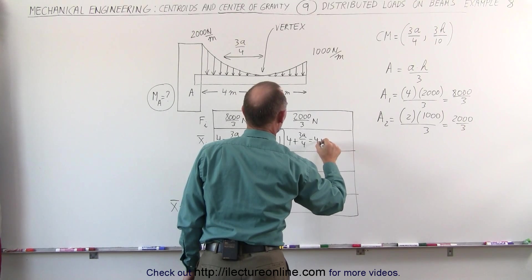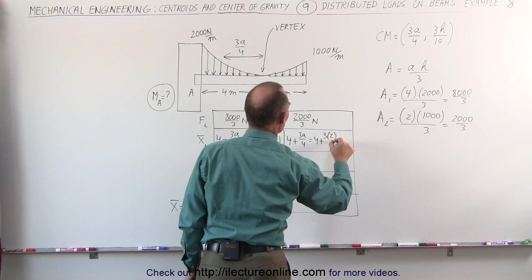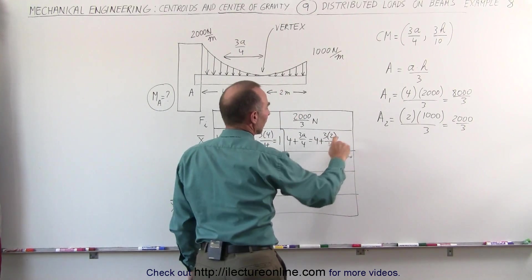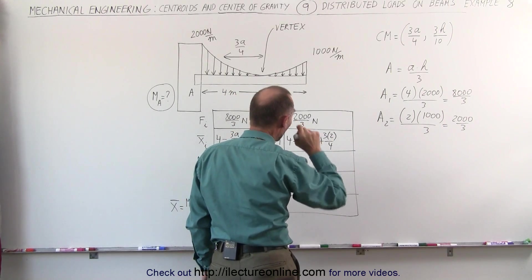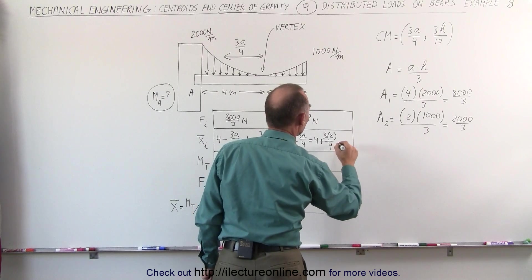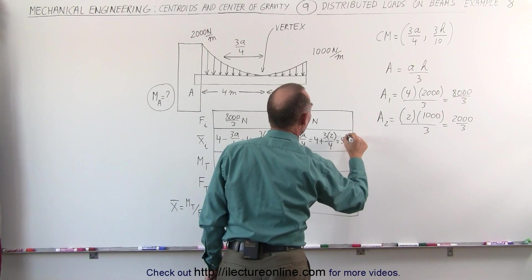This is equal to 4 plus 3 times 2 divided by 4, that's 1 half times 3, that would be 1 and a half plus 4, which is 5 and a half.